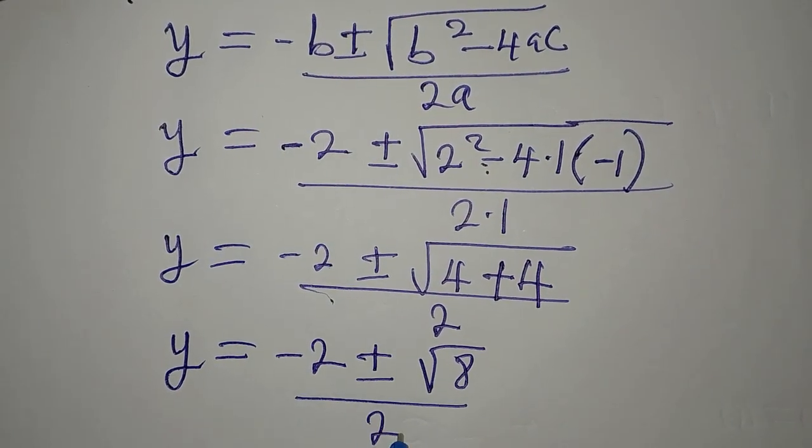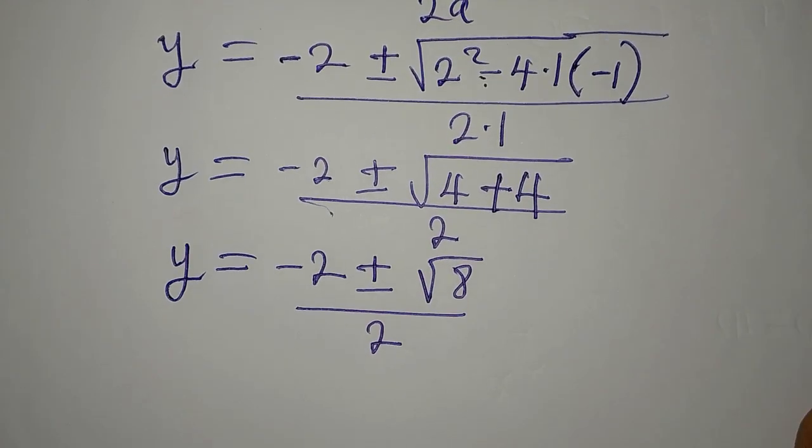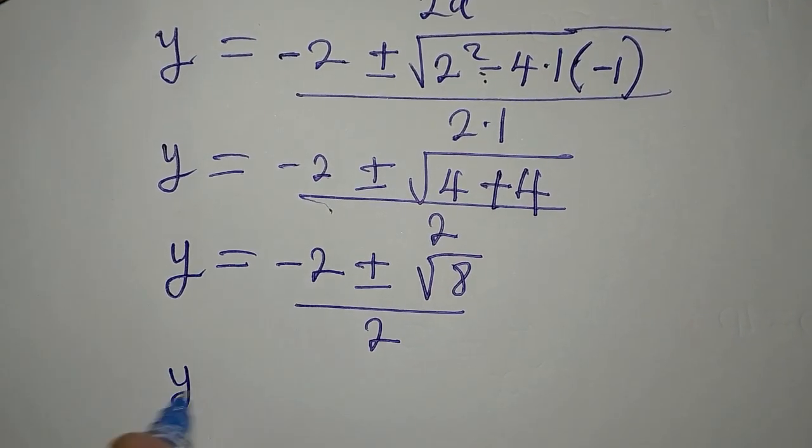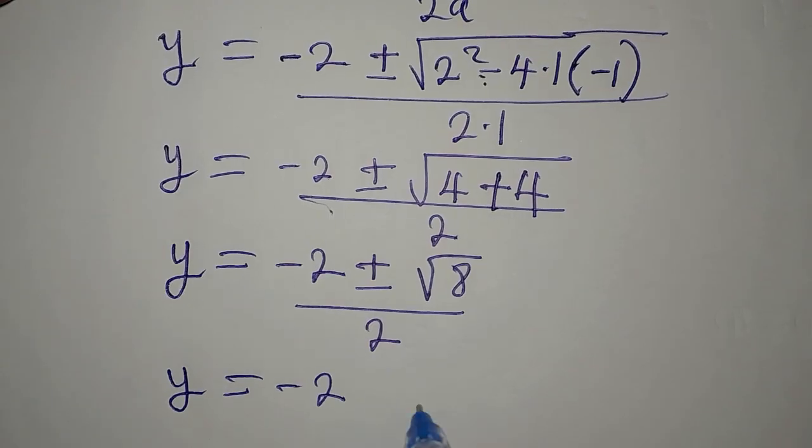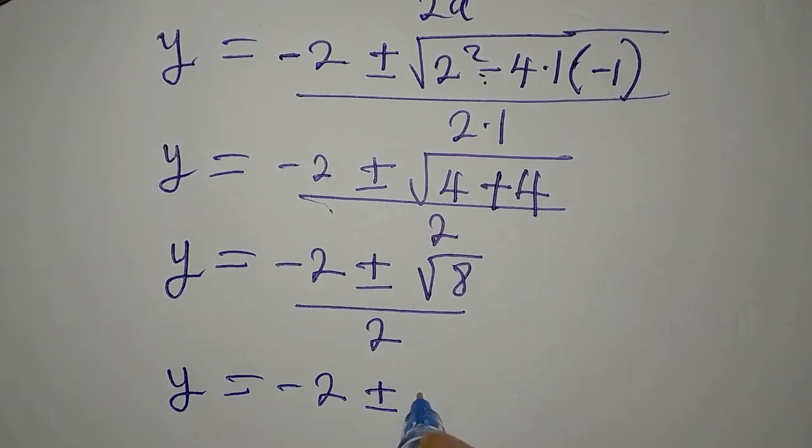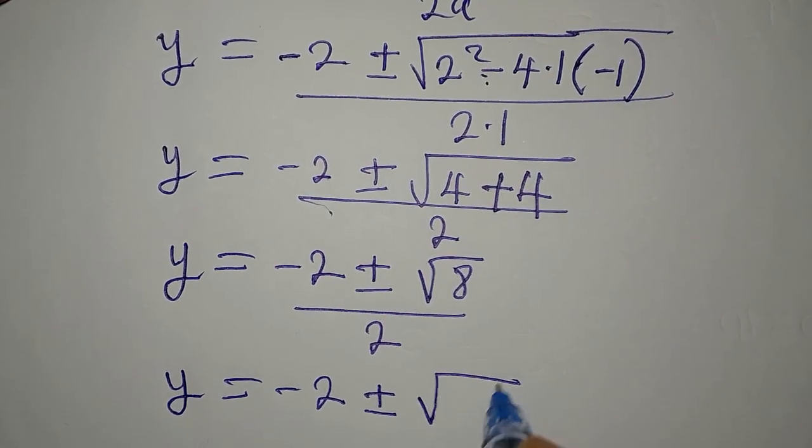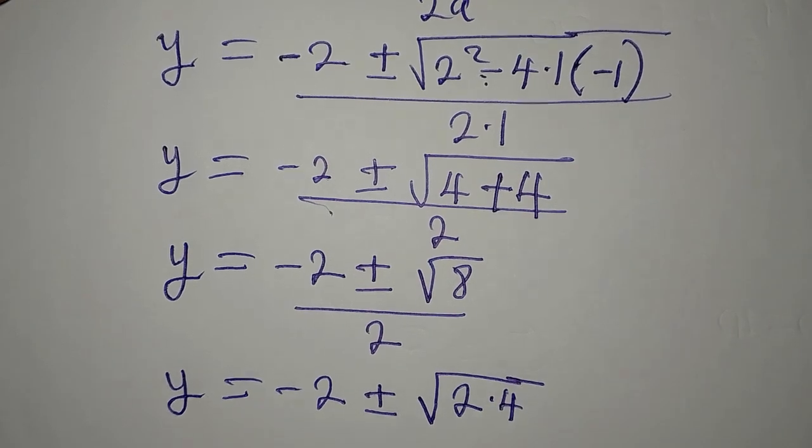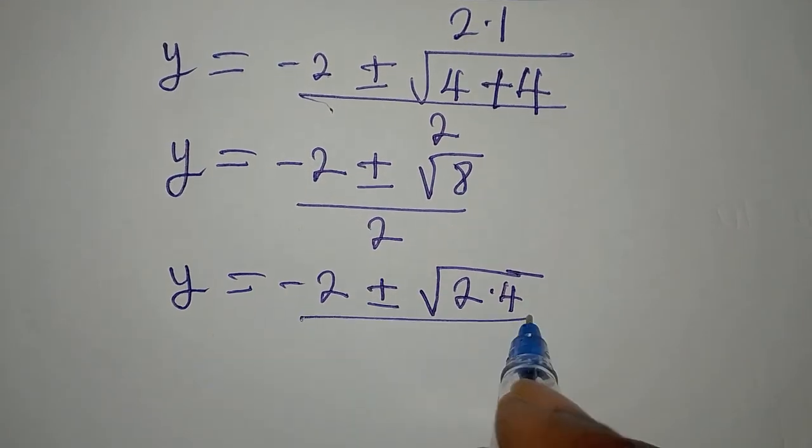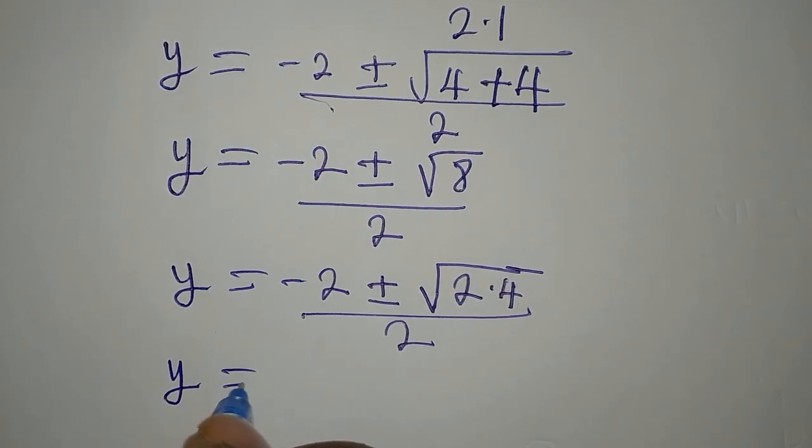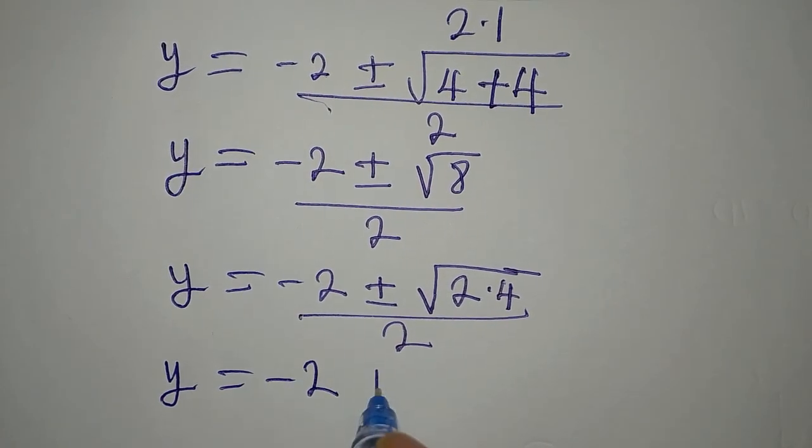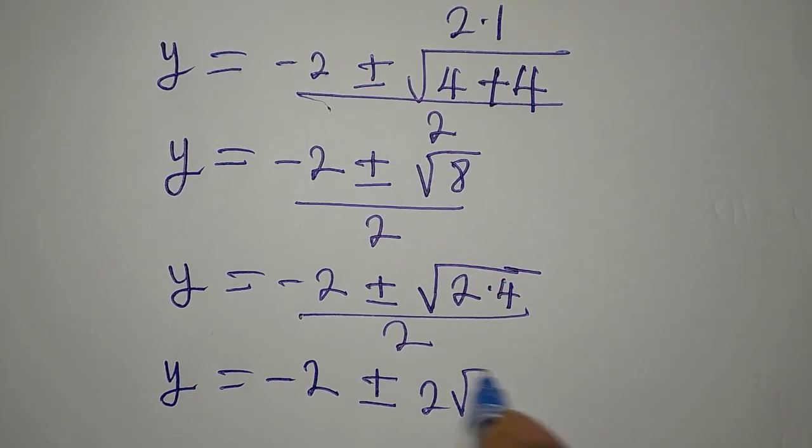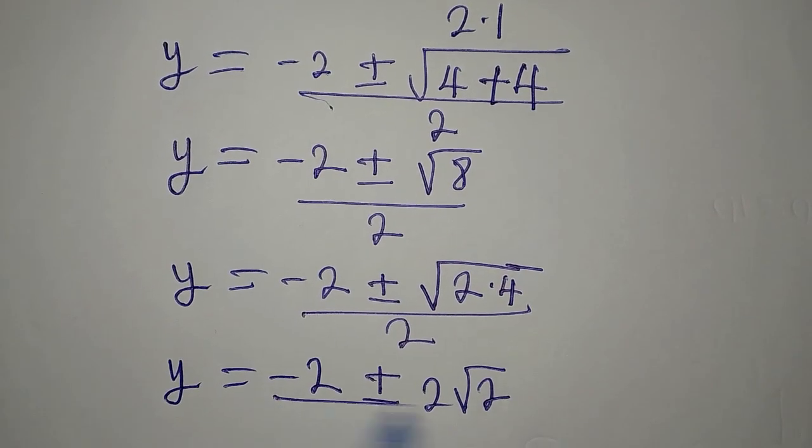We divide by 2, and now y is equal to minus 2 plus or minus square root of 8, then everything is over 2. We can break that 8 down, so we get y is equal to minus 2 plus or minus square root of 2 times 4, or 4 times 2, over 2.